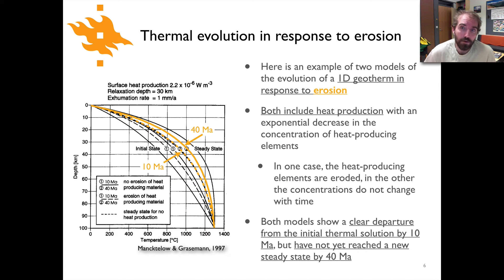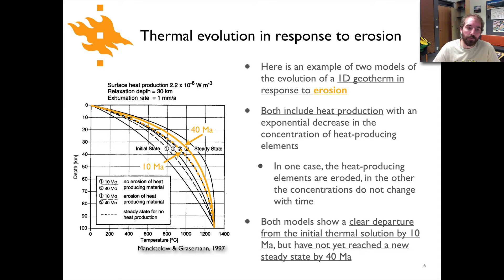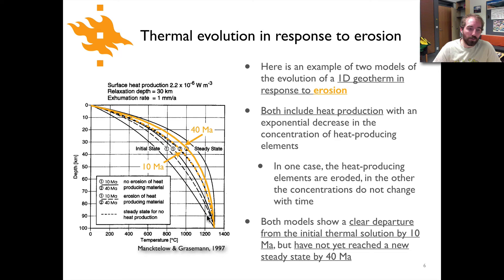Here's another example of the evolution of temperatures in the crust in response to erosion, from a 1997 paper by Magdalow and Grossman. In this figure we're looking at cases of time-dependent erosion. The solid line is the initial geotherm — surface temperature is zero degrees at depth zero, and at 100 kilometers the temperature is 1300 degrees. The geotherm is slightly curved due to heat-producing elements within the crust.